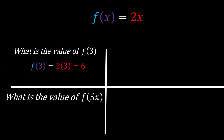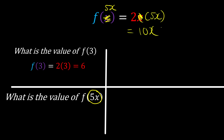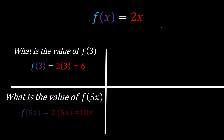So we process it: 2 times 3 gives us 6 as our answer. Next, what is the value of f when the input is 5x? Since we know your input is 5x, we process it by multiplying by 2 — 2 times 5x is 10x. That's how we do it.